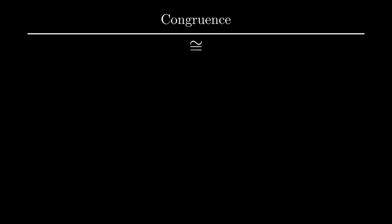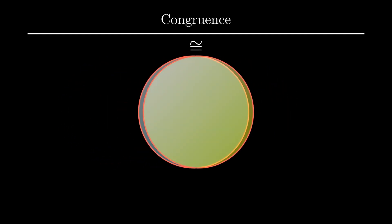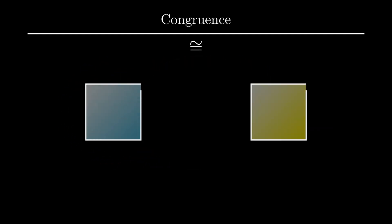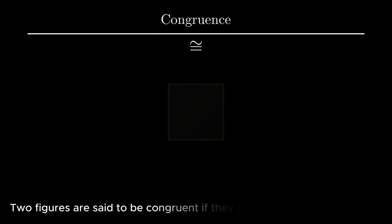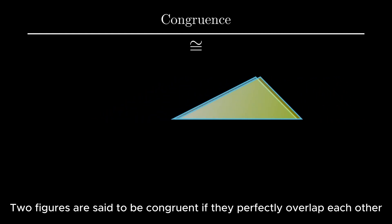Let's start with the term congruency. Two figures are said to be congruent if they both have same shape and equal size. In simple words, if two given figures overlap each other perfectly, then they are said to be congruent.